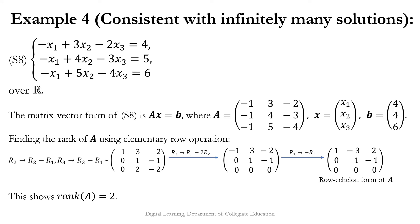Here is another example of a consistent system with infinitely many solutions — system S8: −x₁ + 3x₂ − 2x₃ = 4, −x₁ + 4x₂ − 3x₃ = 5, and −x₁ + 5x₂ − 4x₃ = 6 over the real field. The matrix-vector form is Ax = b where A is the 3×3 matrix with entries −1, 3, −2; −1, 4, −3; −1, 5, −4; x is a 3×1 vector with entries x₁, x₂, x₃; and b is a 3×1 vector with entries 4, 5, 6.